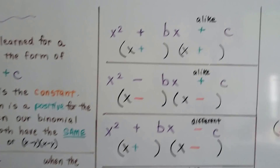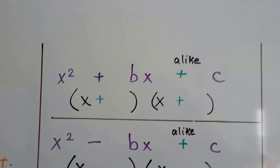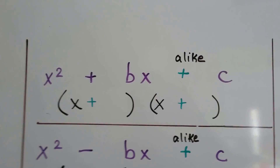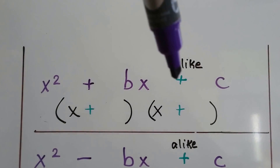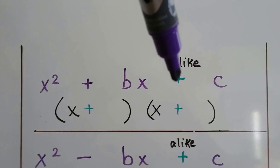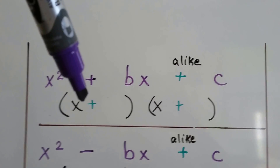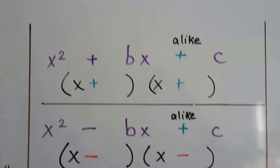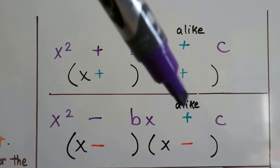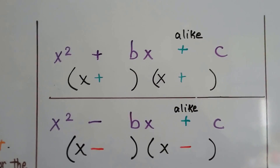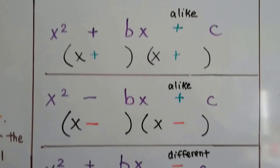Take a look at this. We've got x squared plus bx plus c — that tells us they're both going to be alike. So they could both be positive, or they could both be negative, depending on what the numbers are.